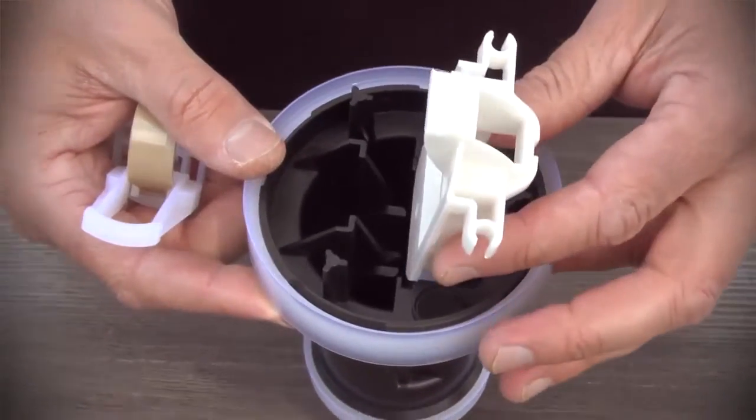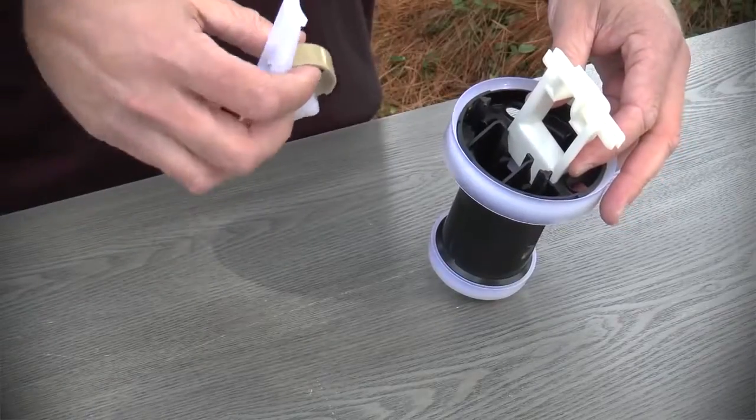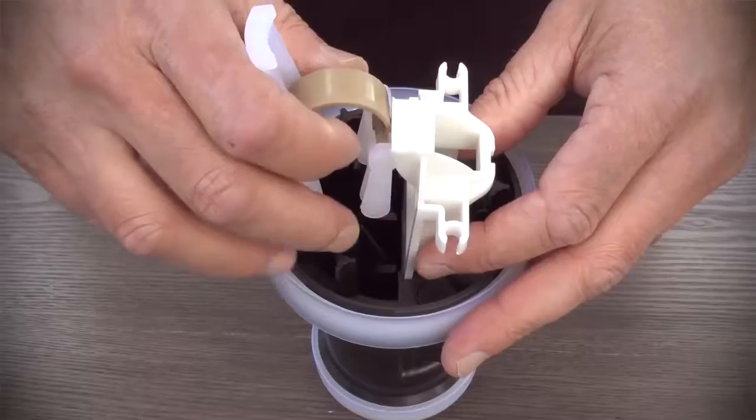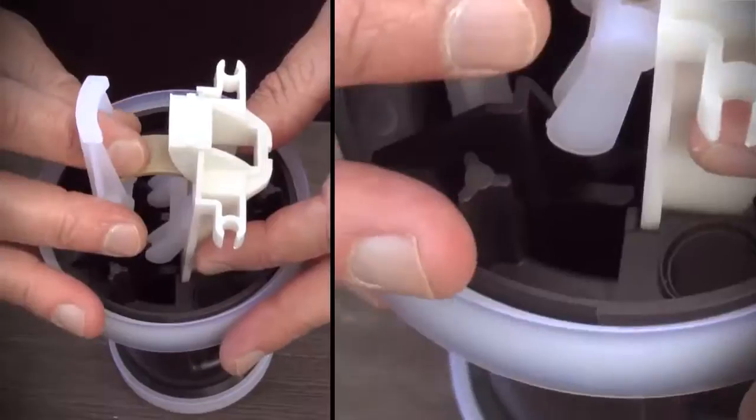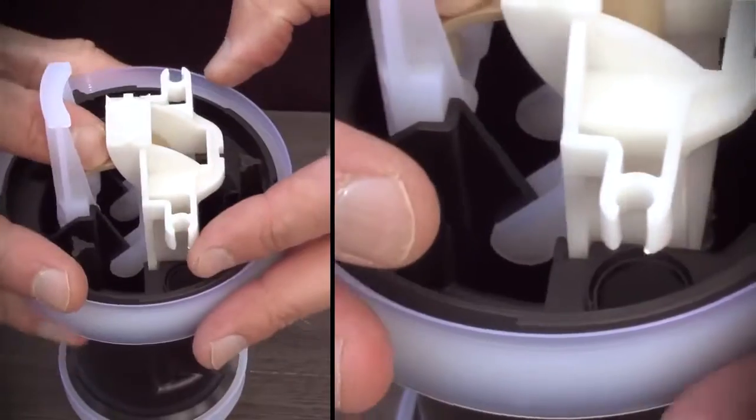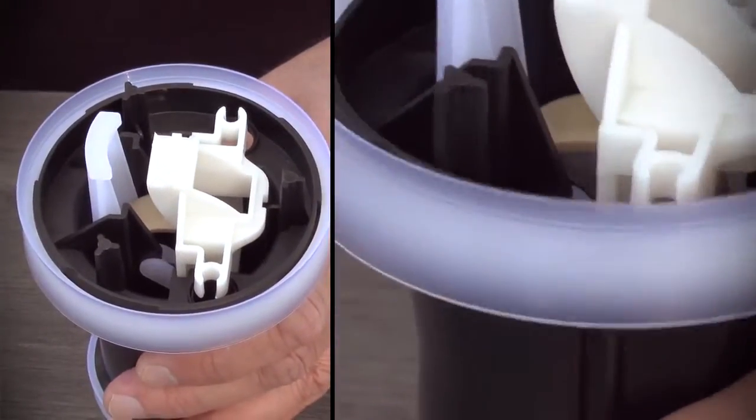Now insert both sub-assemblies into the piston shell. Using your index finger, push on the spring. This will set everything into place and you will hear a click.